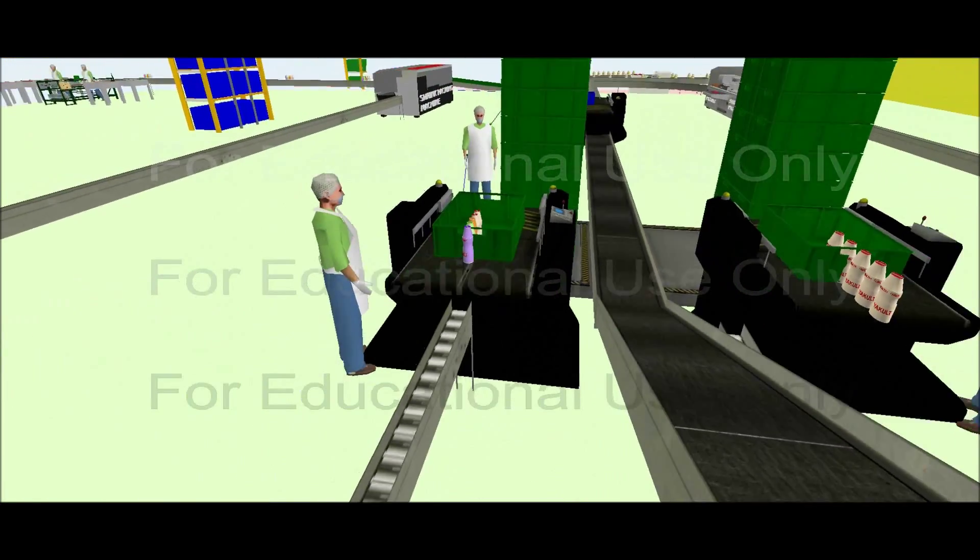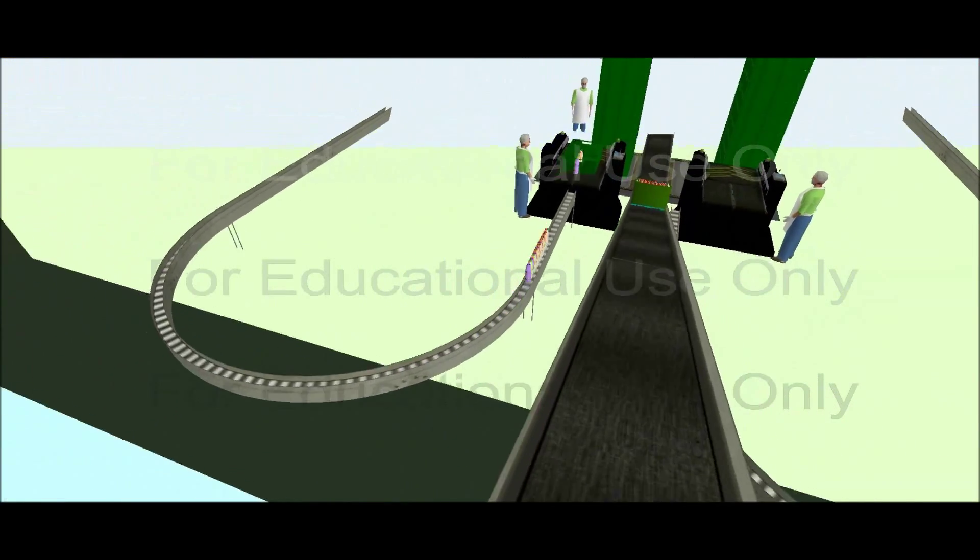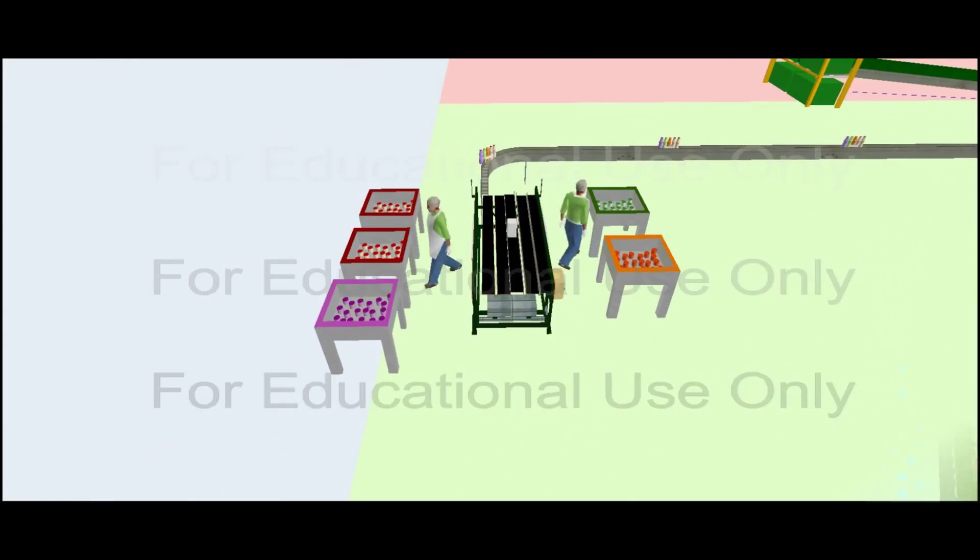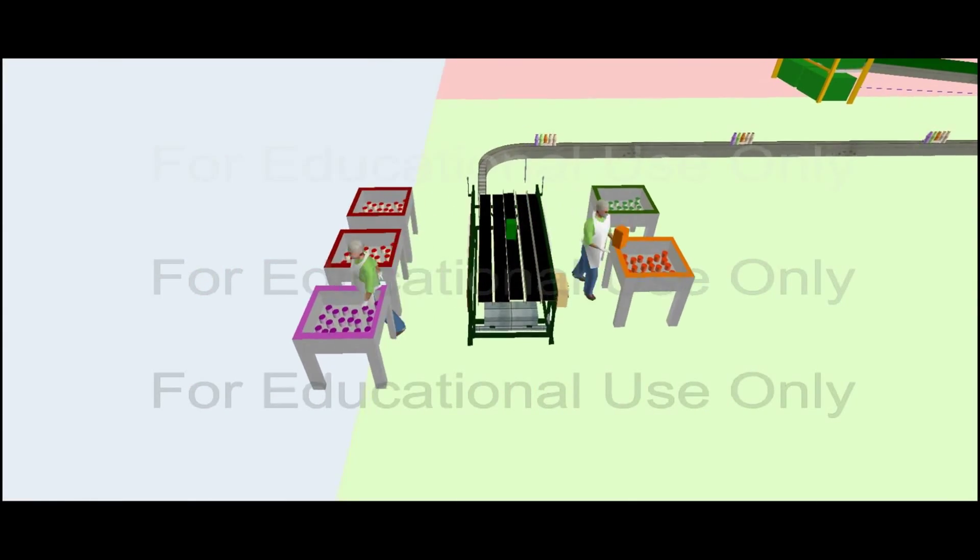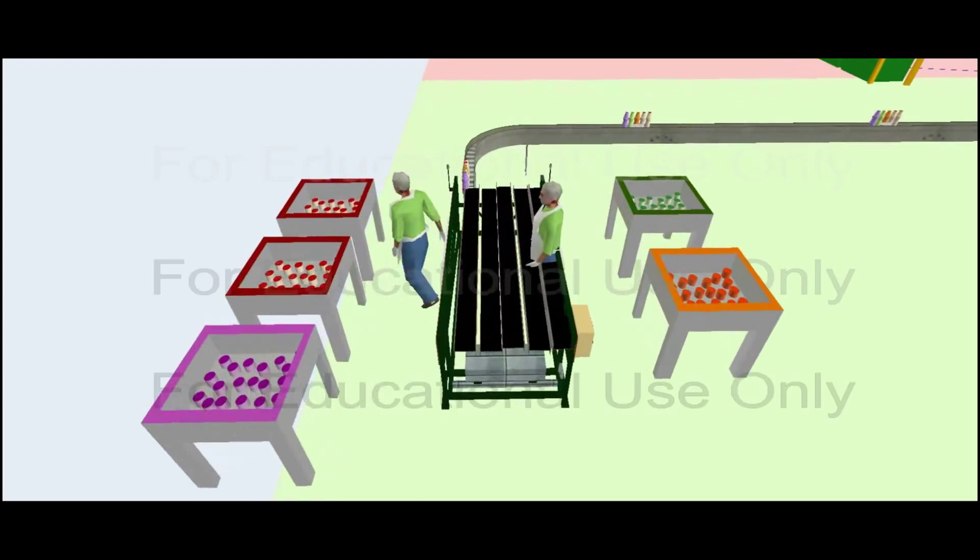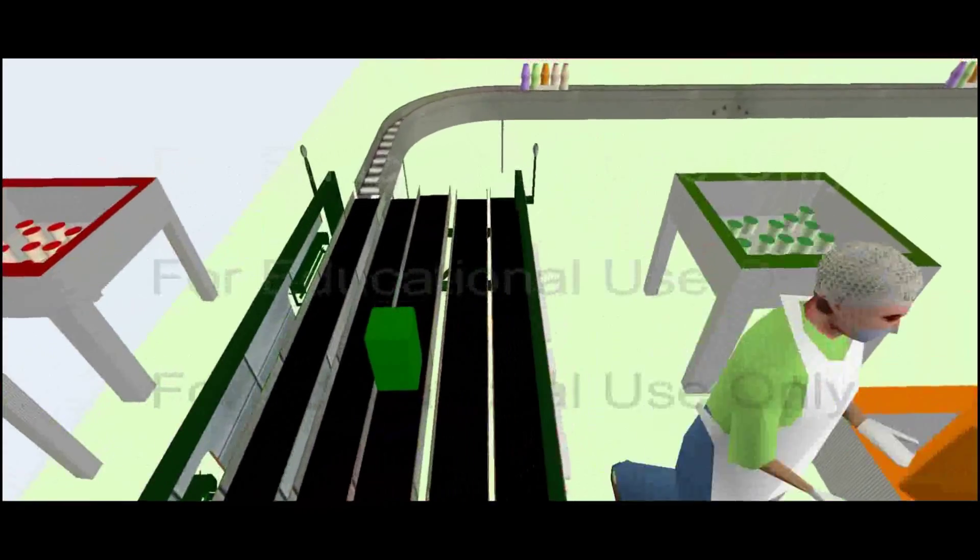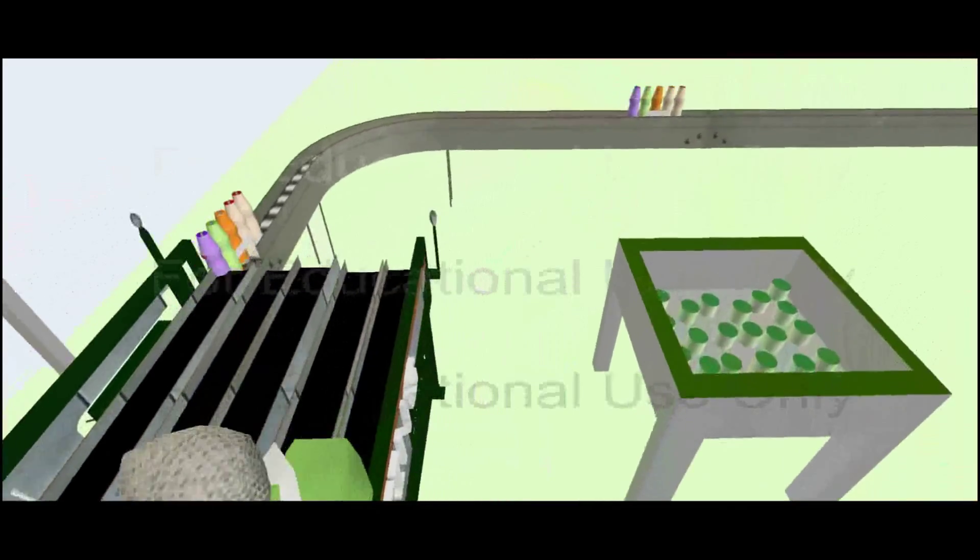Each tray is then sent through the conveyor belt to the cold area. Based on forecasted demand, a batch consisting of the four different Youcold flavors is retrieved from the cold area and manually placed onto a conveyor.